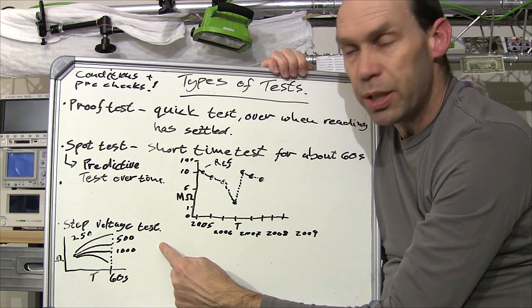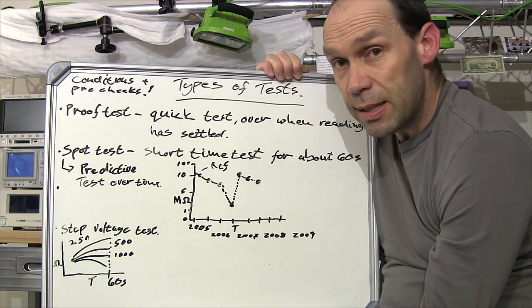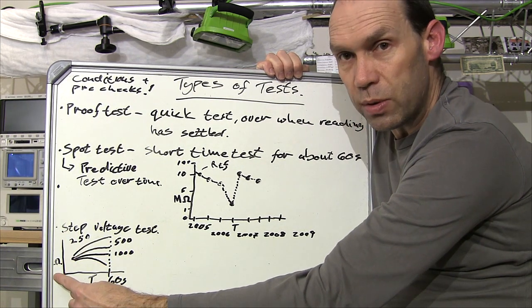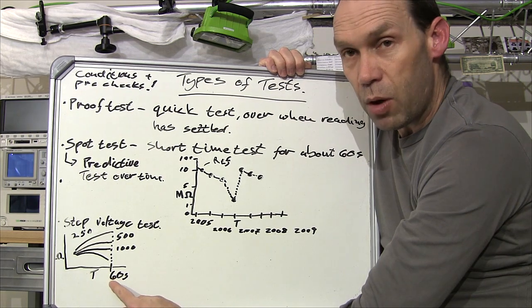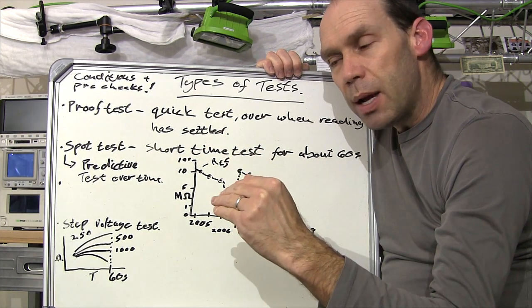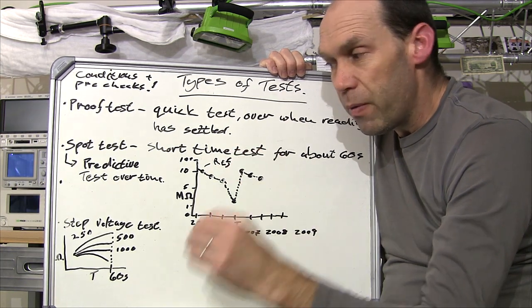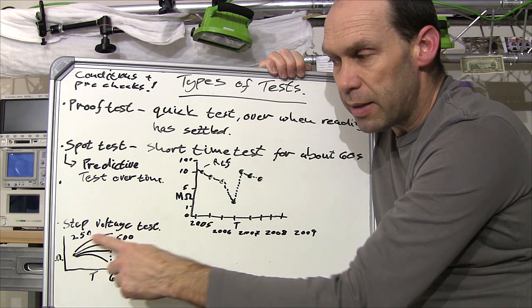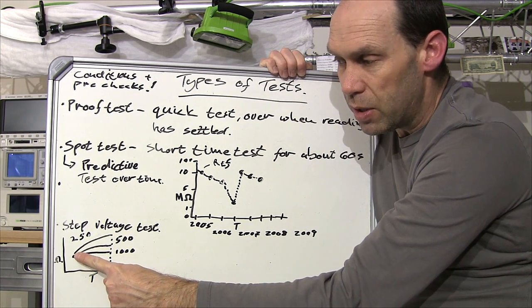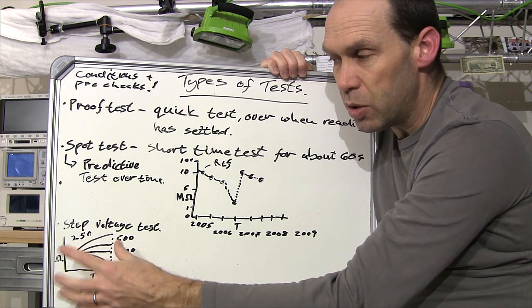Right so the next test is a step voltage test and this is another test that is done over time, it's done over 60 seconds again. So one minute and what you do, you graph again your resistance versus time over 60 seconds but you would step up the voltage. It's like an increased pressure test or an increased stress test of the system. So it starts off at let's say 250 volts and as you can see you've got this graph which is kind of slowly going up.